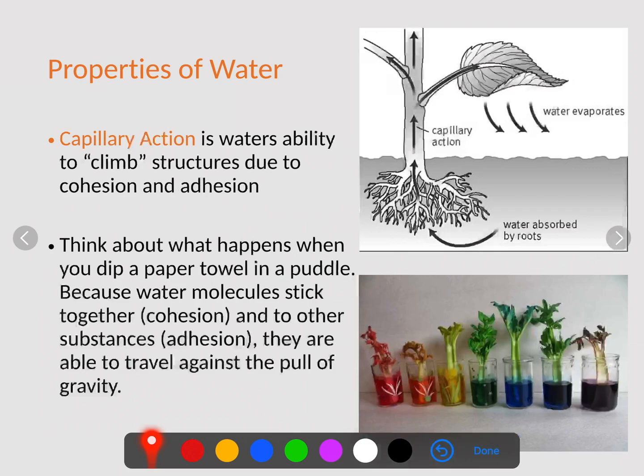Now, like we talked about adhesion and cohesion, sometimes it's referred to as capillary action. Capillary action is when that water does climb up through those structures. So again, water absorbed through the roots is able to climb up the plant, which allows it to survive over time.